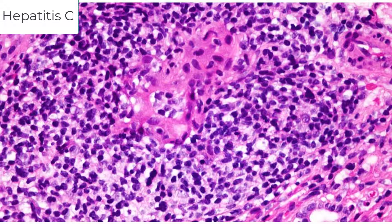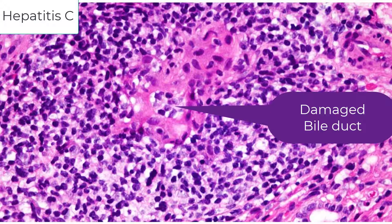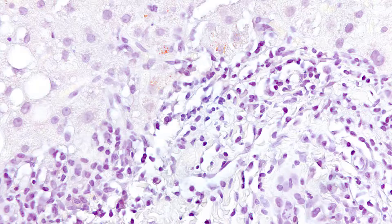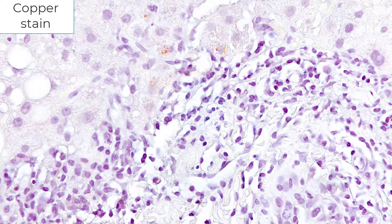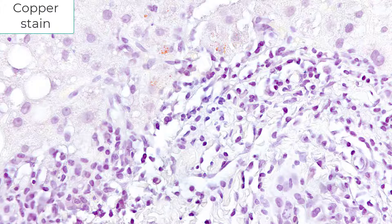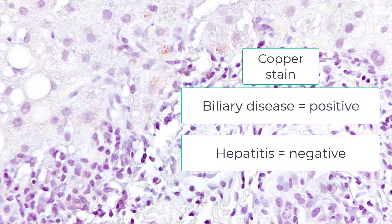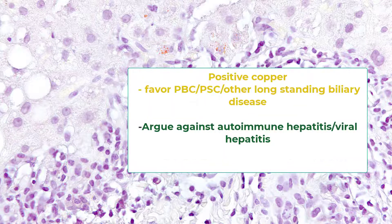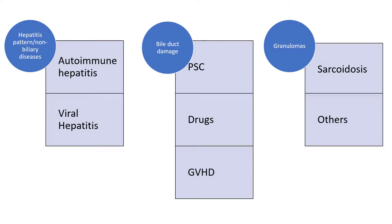This is hepatitis C infection — something we don't see very much of anymore — to demonstrate that other forms of hepatitis, such as viral hepatitis, can damage the bile duct. This is a copper stain from a patient with primary biliary cholangitis, and you can see periportal copper accumulation. The copper stain is incredibly helpful to distinguish disease primarily affecting the bile duct — where the copper stain tends to be positive — versus a hepatitis, inflammation of the hepatocytes, where the copper stain is negative. So if you see a positive copper stain, think biliary disorder.